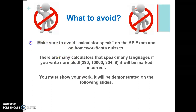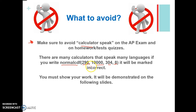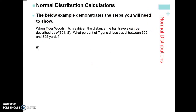Make sure to avoid calculator speak on the AP exam and on homeworks, tests, and quizzes. If you just write normal CDF with lower bound, upper bound, mean, and standard deviation, it's going to be marked wrong — because every calculator is different and the AP exam readers don't know what calculator you're using. This doesn't show that you understand where you're getting the Z score from. You have to show your work. You'll be given examples on the next few slides, and you can always go back to the extra practice to see what work you need to show.